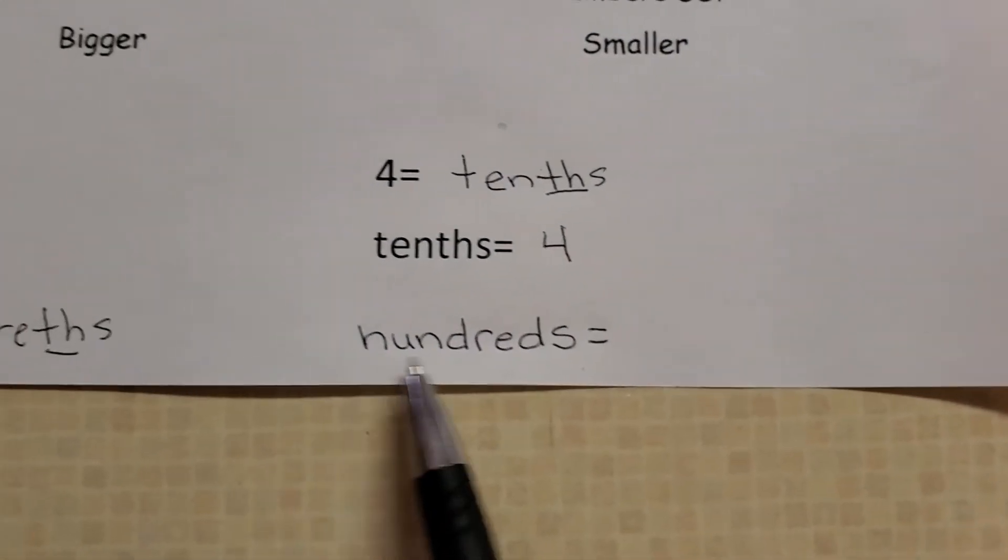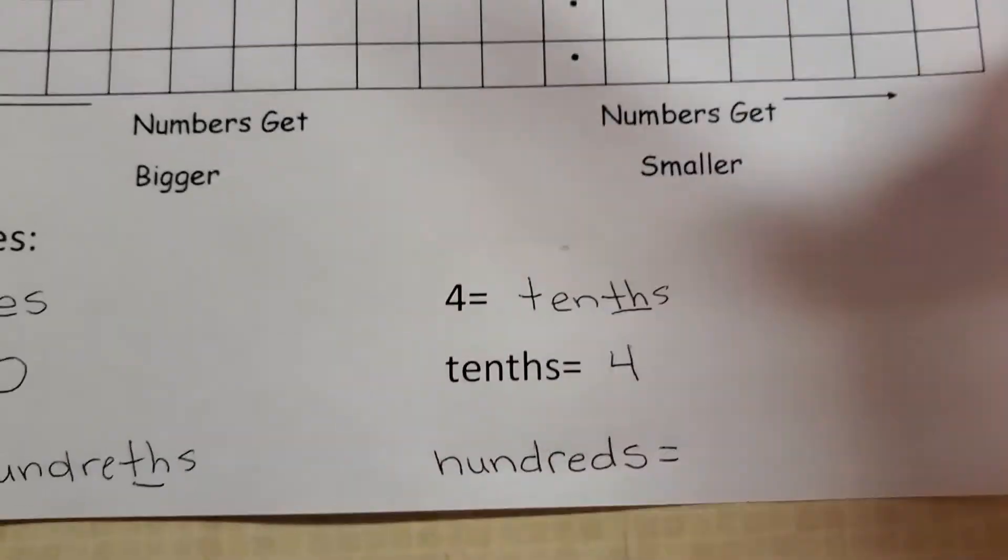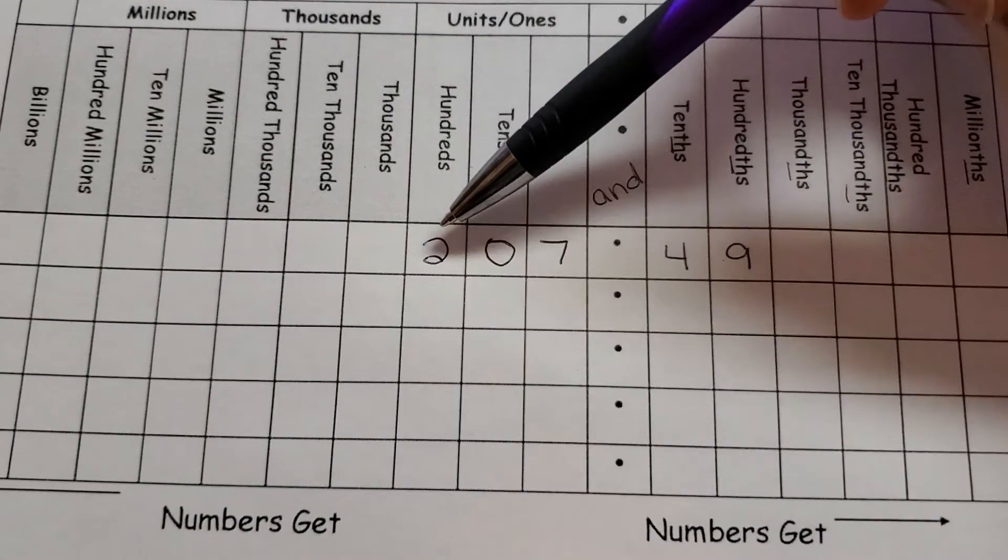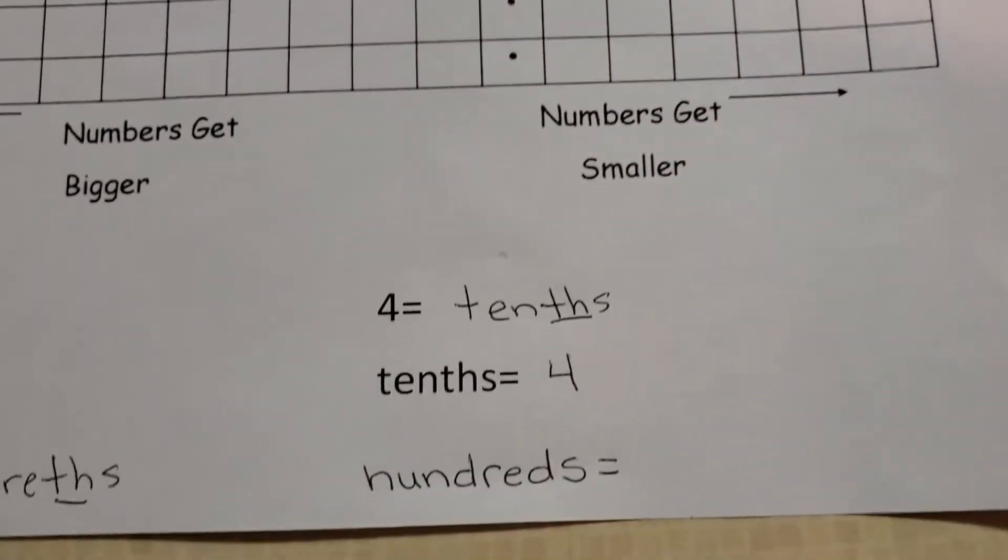And the last one, hundreds. There's no th. So it's going to be on this side of our chart. Hundreds. What number is in the hundreds position? It is number two.